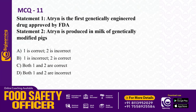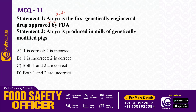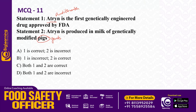Statement type question: Statement 1 — Atrine is the first genetically engineered drug approved by FDA. Atrine is an anticoagulant, an antithrombin, and Atrine is a brand name. Statement 2 — Atrine is produced in the milk of genetically modified goats. Statement 1 is correct but Statement 2 is incorrect — it is produced in goats, not pigs. So Statement 1 is right but Statement 2 is incorrect.